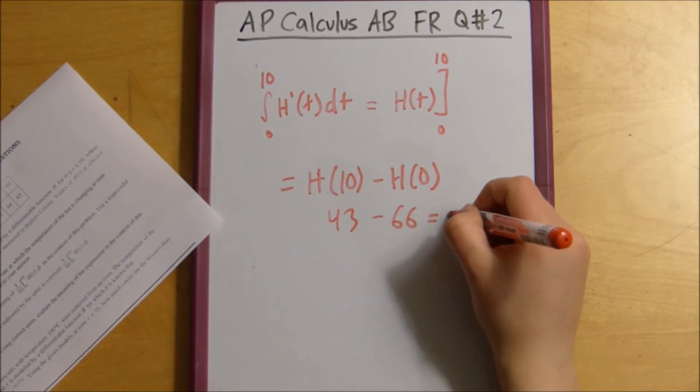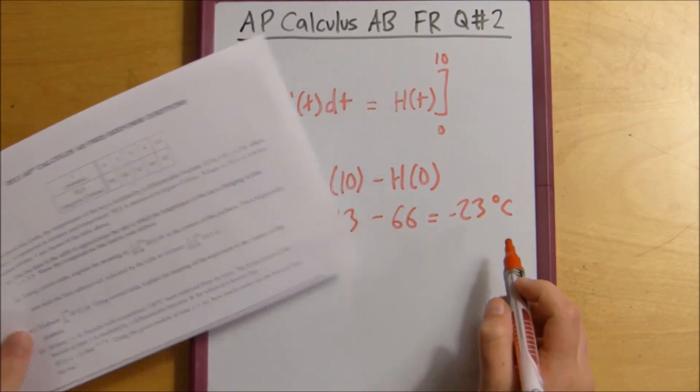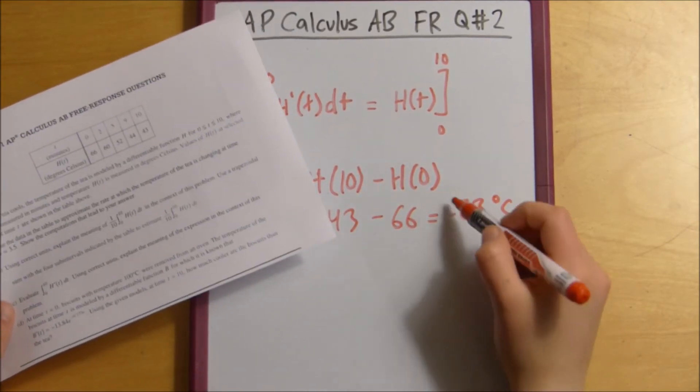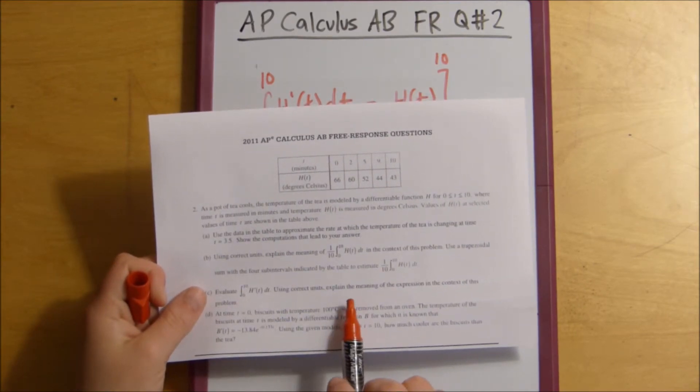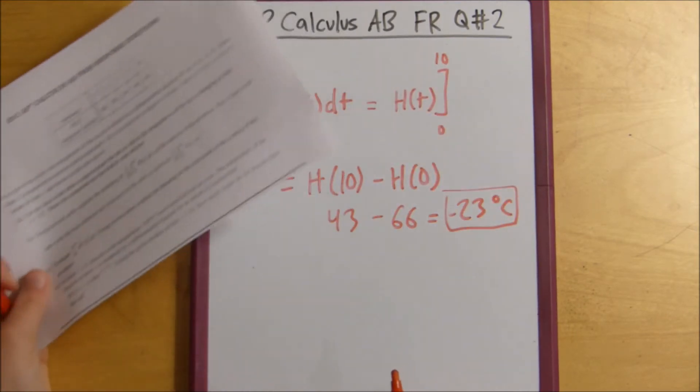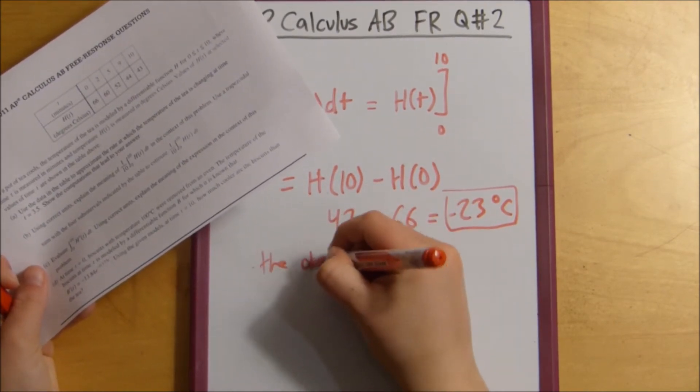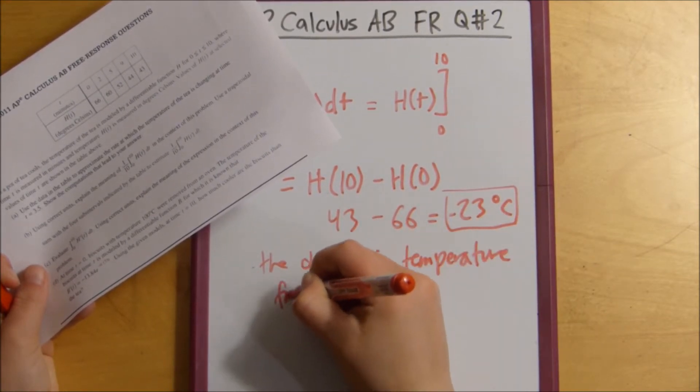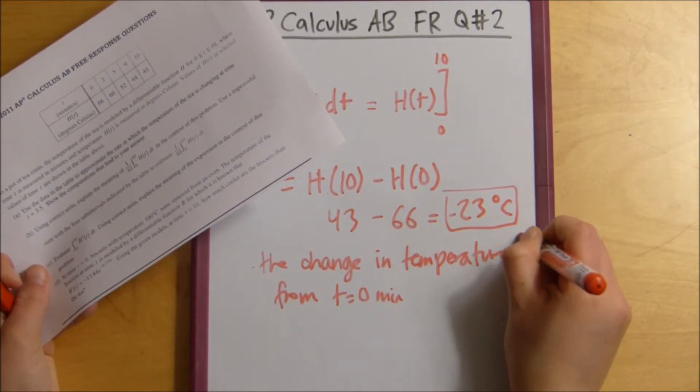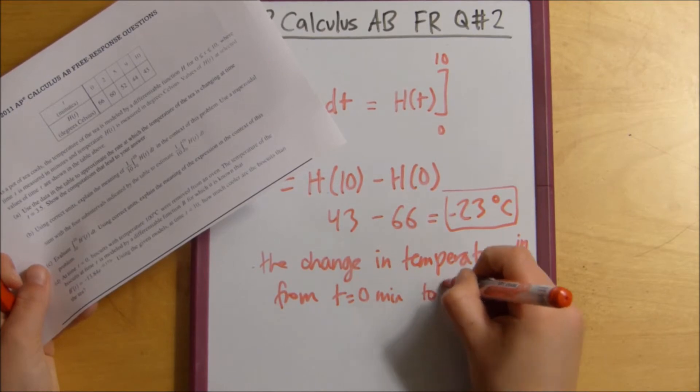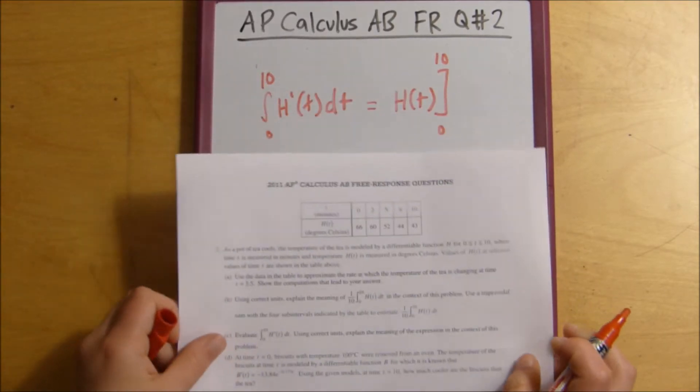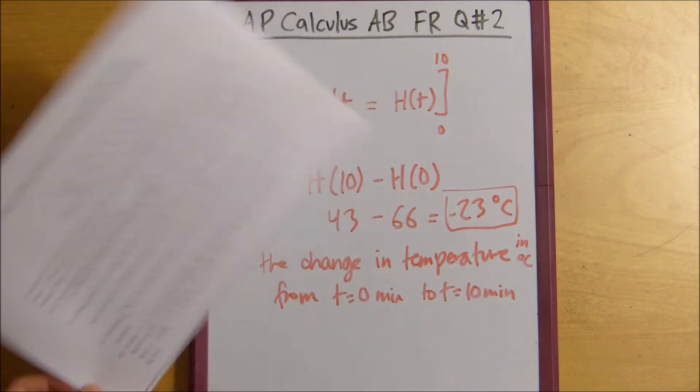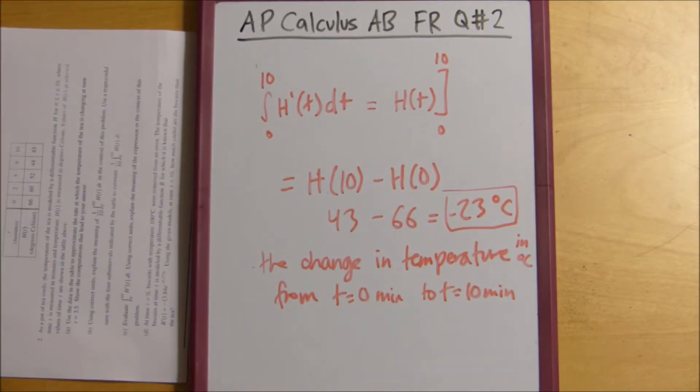So, this is negative 23 degrees Celsius, because I know it's degrees Celsius, because h of 10 was in degrees Celsius, and so was h of 0. And then, when we're asked to explain the meaning of the expression, I would say that this is the change in temperature from t equals 0 min to t equals 10 min. Essentially, what it's saying is, how much has this pot of tea cooled down in 10 minutes? That's what this question is asking. So, pretty simple, once you sort of get the hang of it.